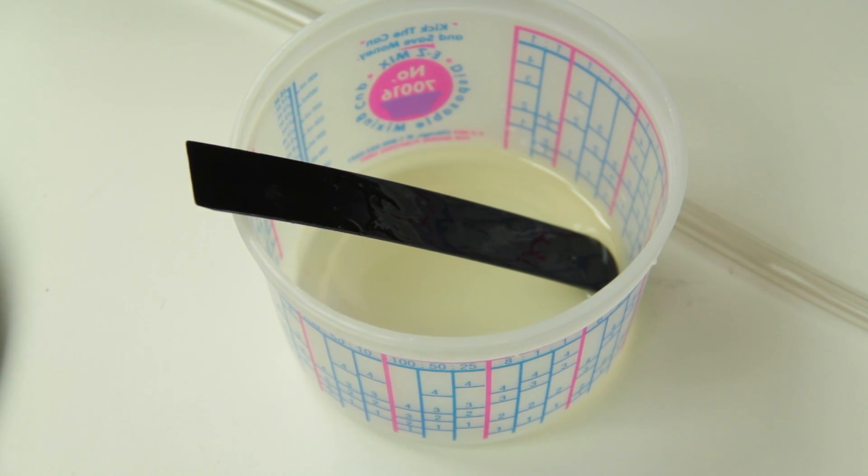The main reason epoxies will fail is they haven't cured correctly because they either haven't mixed thoroughly or they haven't been mixed in the correct ratios. Most of the time you would do this with mass. You would weigh the epoxy. I actually have a set of metered pumps that will meter out the epoxy correctly for me.